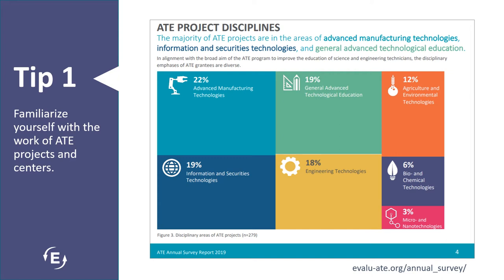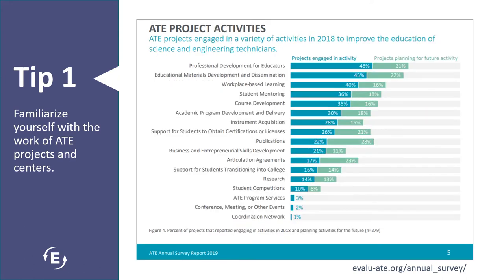In contrast, only 6% of projects were in the area of bio and chemical technologies, and 3% were in the area of micro and nanotechnologies. The survey report also highlights the primary activities of ATE projects. You can see in the graph that projects most frequently engage in professional development for educators and educational materials development and dissemination. Understanding the types of activities and STEM areas currently funded can help you determine whether your proposal is a good fit for this program.